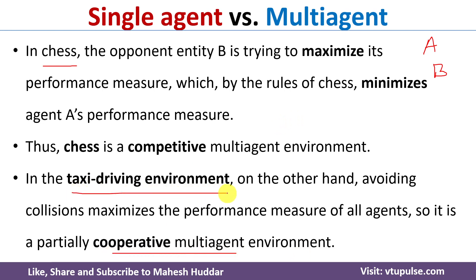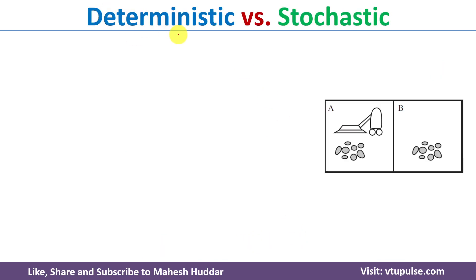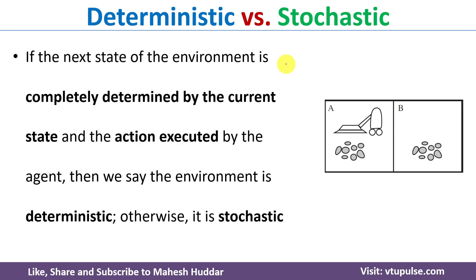In an automated taxi driving environment, two or more agents try to avoid collisions so that they can maximize the performance of all agents. If there is a collision, the performance of both decreases. Since they are cooperating to avoid collisions and maximize overall performance, this is called a cooperative multi-agent environment.